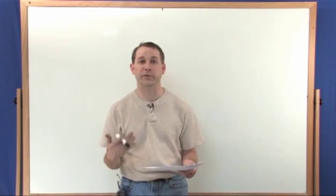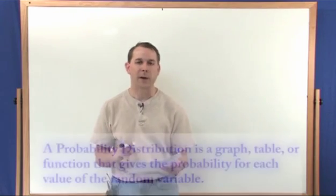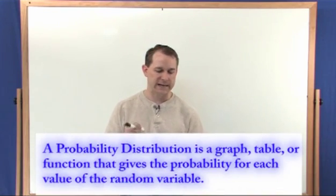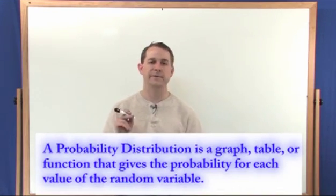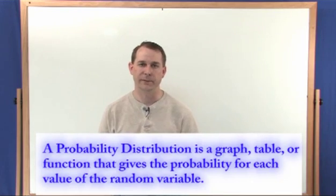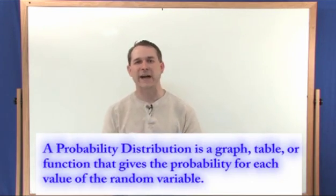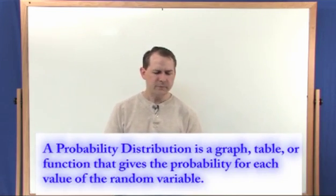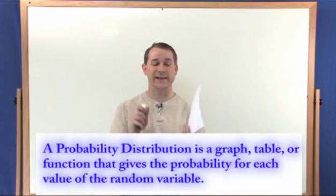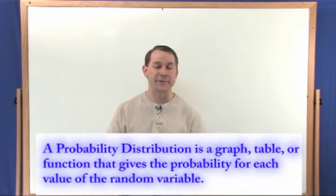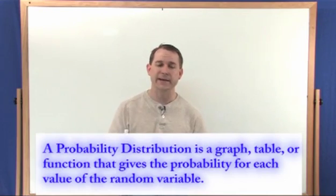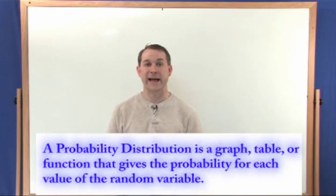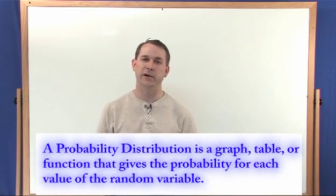Next let's move on into the concept of what a probability distribution is, and then when I can draw some things on the board I'll reinforce both of these definitions. A probability distribution is a graph, a table, or a function that gives the probability of each value of the random variable. So the random variable itself is just this value determined by chance. That's why it's called random.